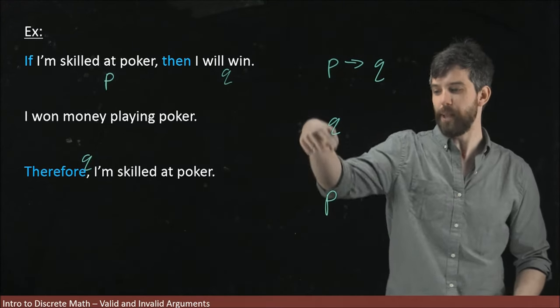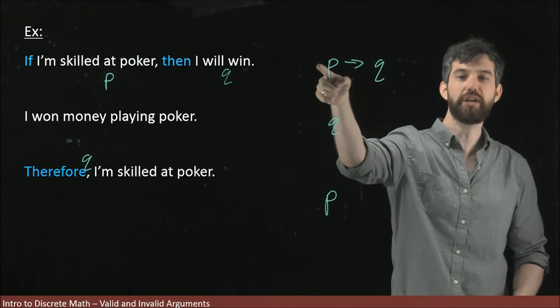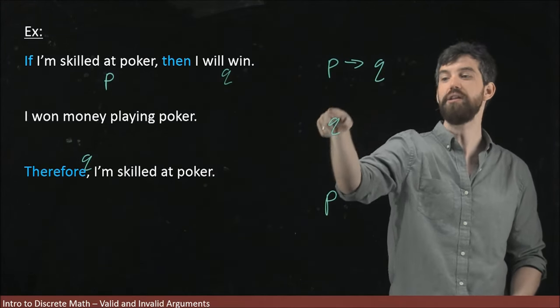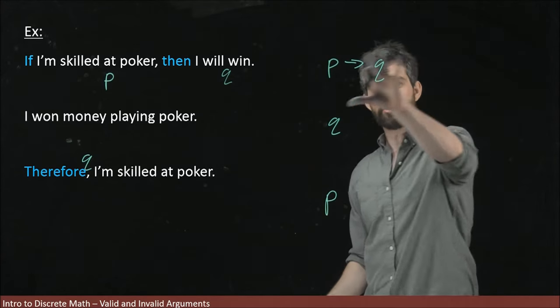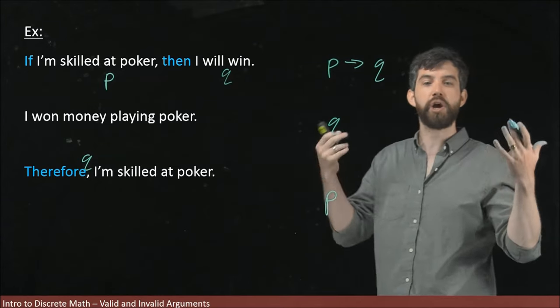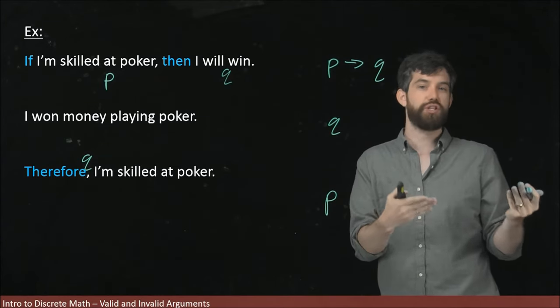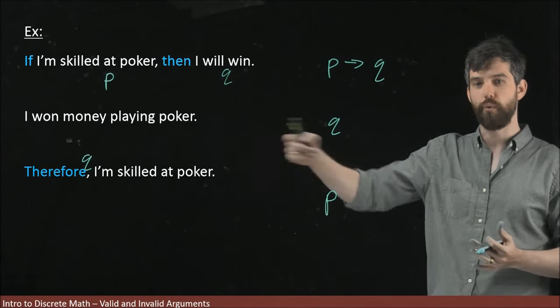Q implies P would be the converse of the statement, not P implies Q. If you had Q implies P here, then from Q you could get P, but not the other way around. So this is trying to use the converse of the statement. We know that a converse is not logically equivalent to the original statement. So this argument does not work.